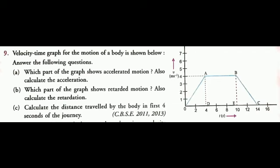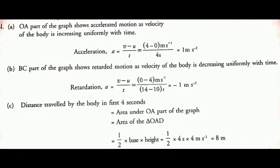Here is the solution for subtopic A. The part OA of the graph shows accelerated motion, as the velocity of the body is increasing uniformly with time. Acceleration A is equal to (V minus U) divided by T, using the first equation of motion. Here V is 4, U is 0, so we have (4 minus 0) divided by 4 seconds, which gives us 1 meter per second squared. So the acceleration for part OA is 1 m/s².